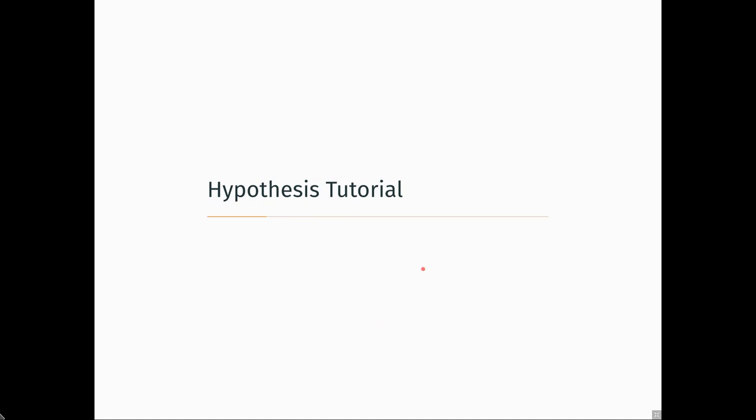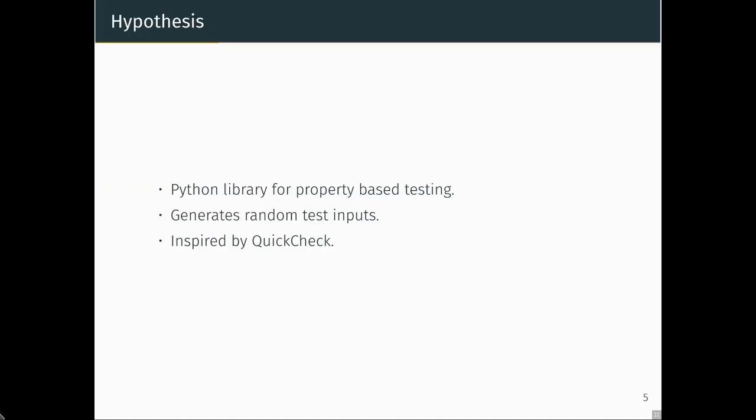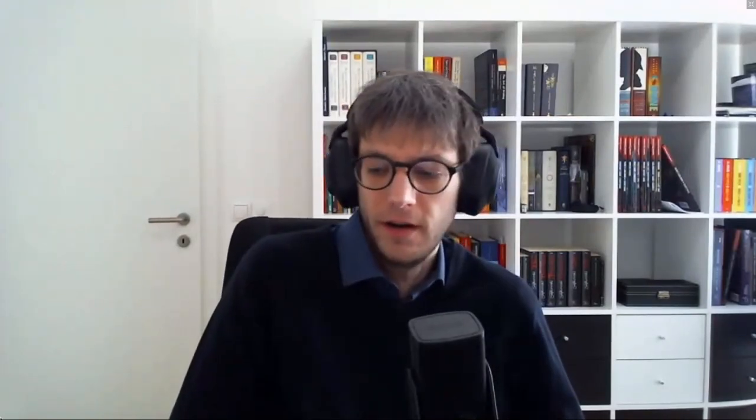The tool I want to present is Hypothesis, a library for Python. It helps you write properties and provides a framework for generating random data for your program inputs. It's inspired by the QuickCheck library, originally invented in Haskell from the functional programming community. The Python library is one of the best-engineered property-based testing libraries, providing the most comfort features for users.